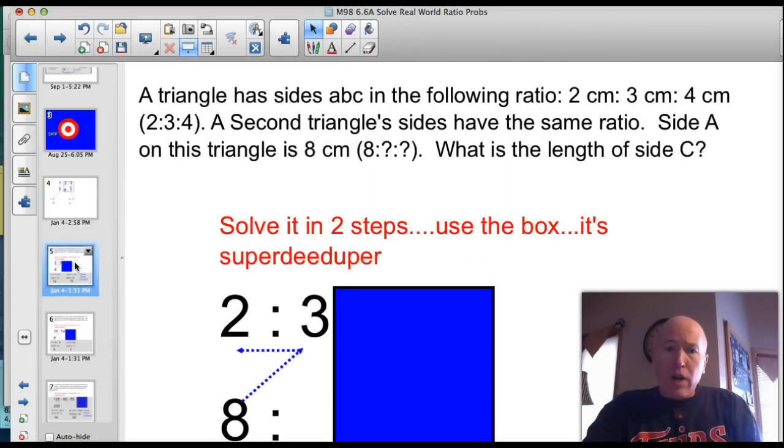We can also find the other number just by sliding over and thinking about this as a ratio as well, 2 to 3 and 8 to something. Let's do the math. Multiply diagonally. 8 times 3 is 24. 24 divided by 2 is 12. And we can pop that in and now we've got the ratio 2 to 3 and 8 to 12. Now, you can still check cross products to make sure they work.